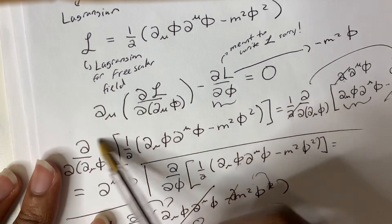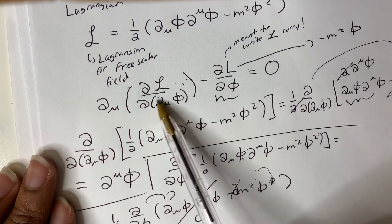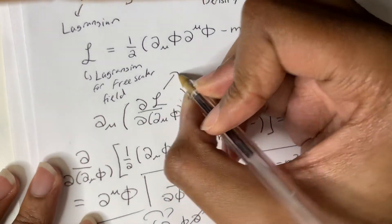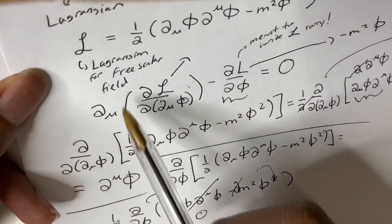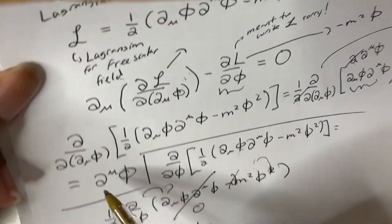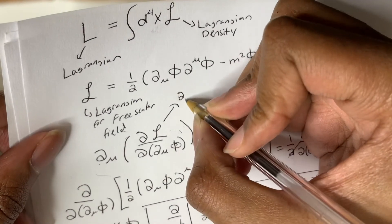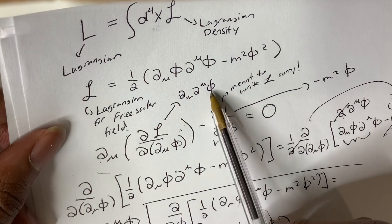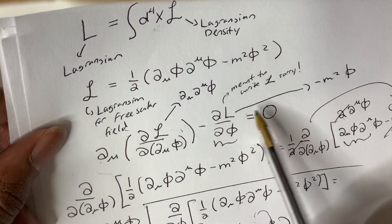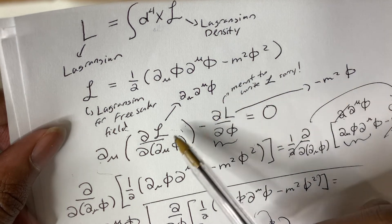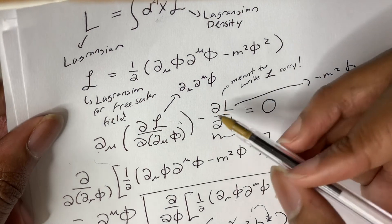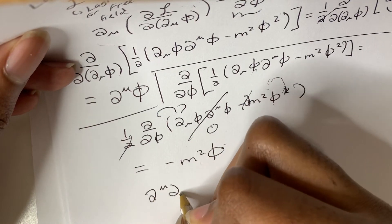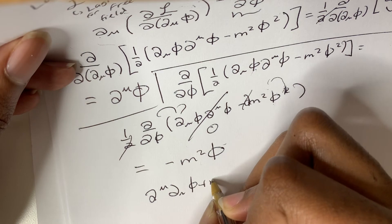And this entire term, well, we calculated what this part was. But we have to apply this mu here. So remember that this part was partial mu phi. So we just apply that mu. We have partial mu partial mu phi. So we have partial mu partial mu phi minus m squared phi, and now we have partial mu partial mu phi plus m squared phi, and that's going to be equal to 0.